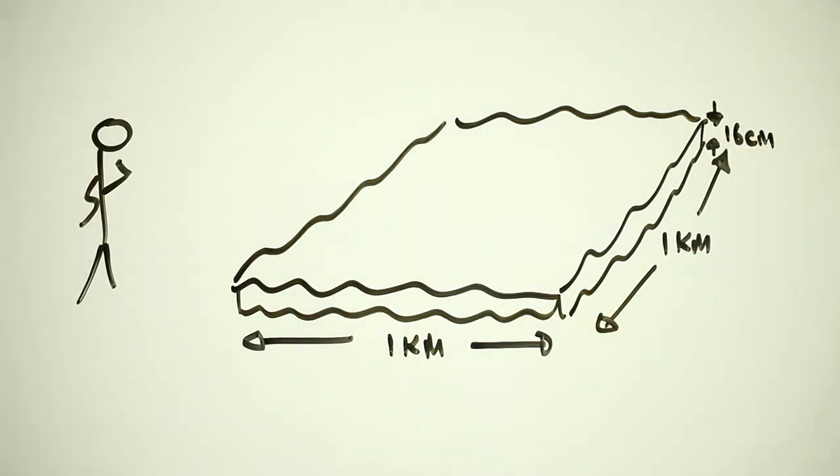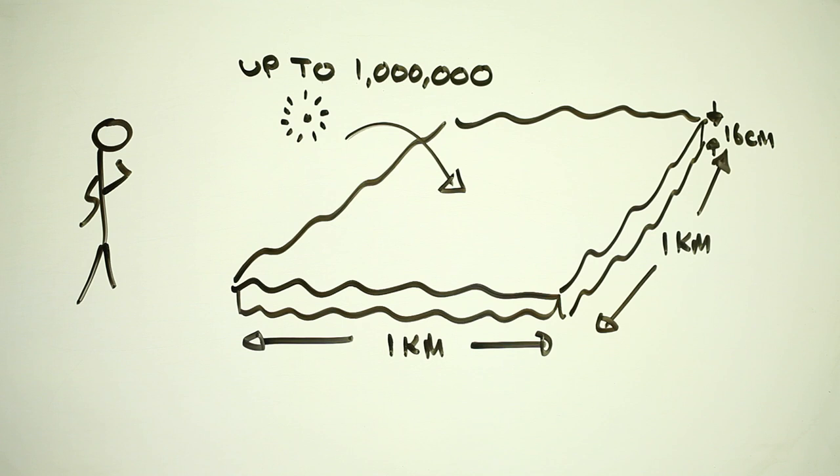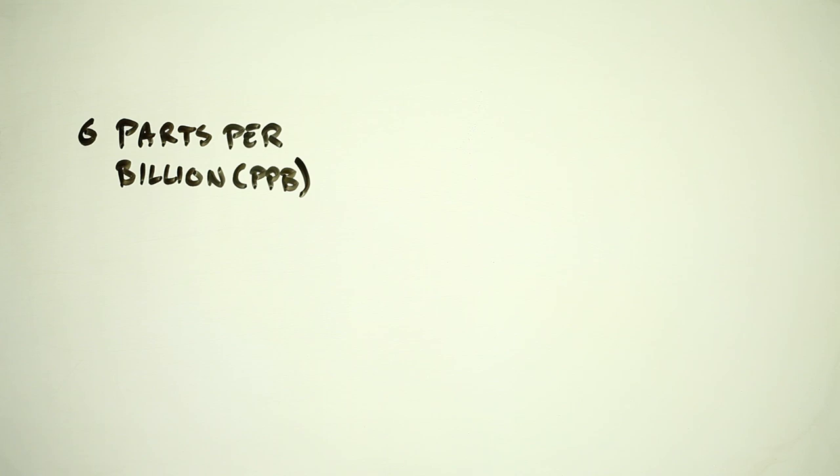Sherry and her colleagues have measured up to a million microbeads per square kilometer at the surface of Lake Ontario. This is roughly equivalent to a polyethylene concentration of six parts per billion.